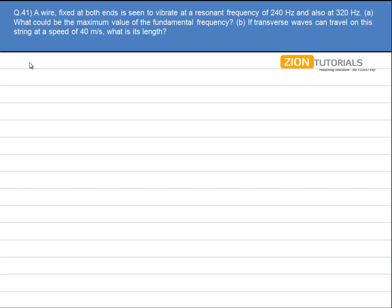A wire fixed at both ends is seen to vibrate at a resonant frequency of 240 Hertz and also at 320 Hertz. What could be the maximum value of the fundamental frequency? The fundamental frequency is the frequency that can divide all the above frequencies.